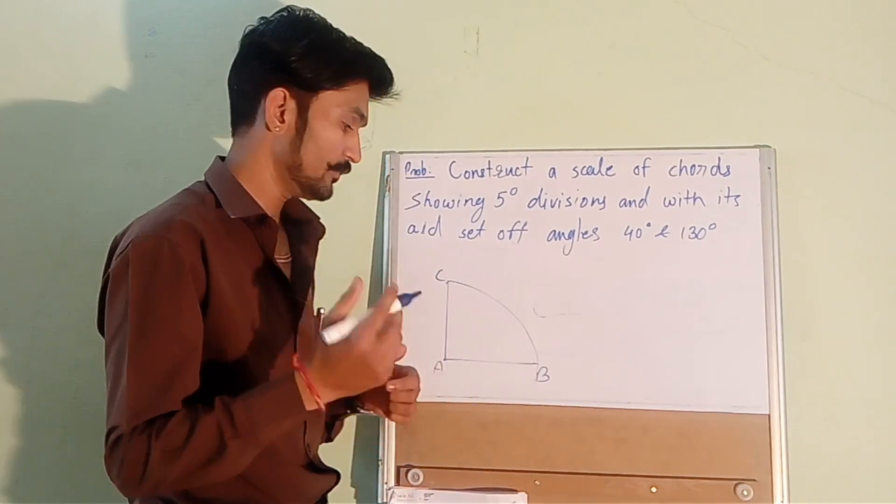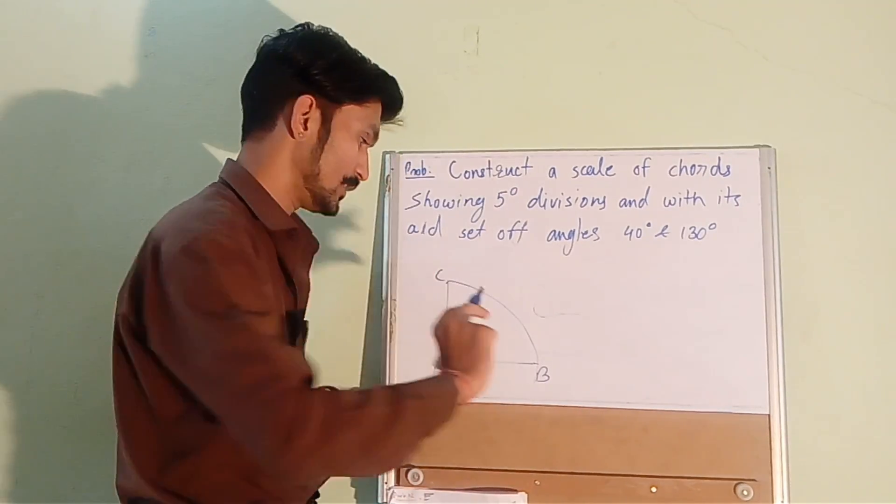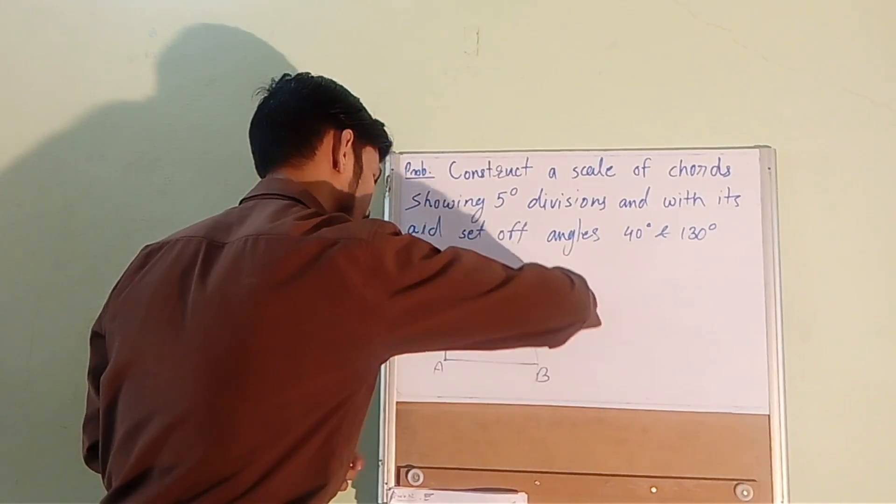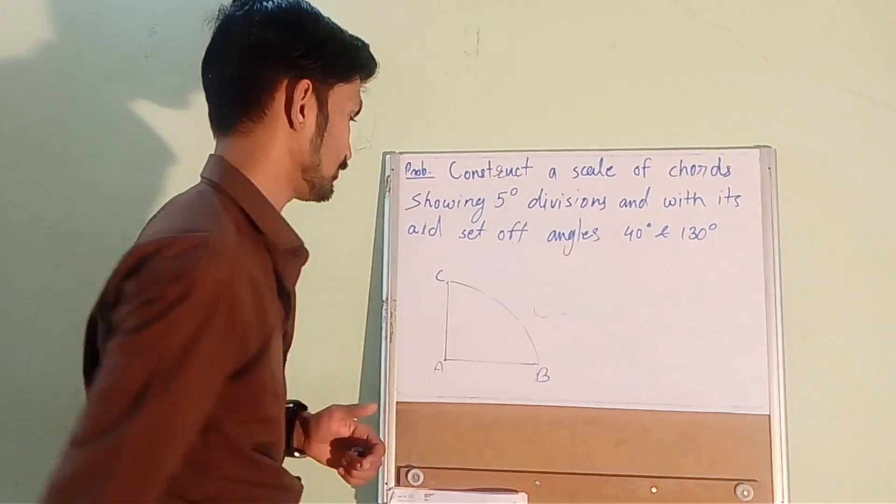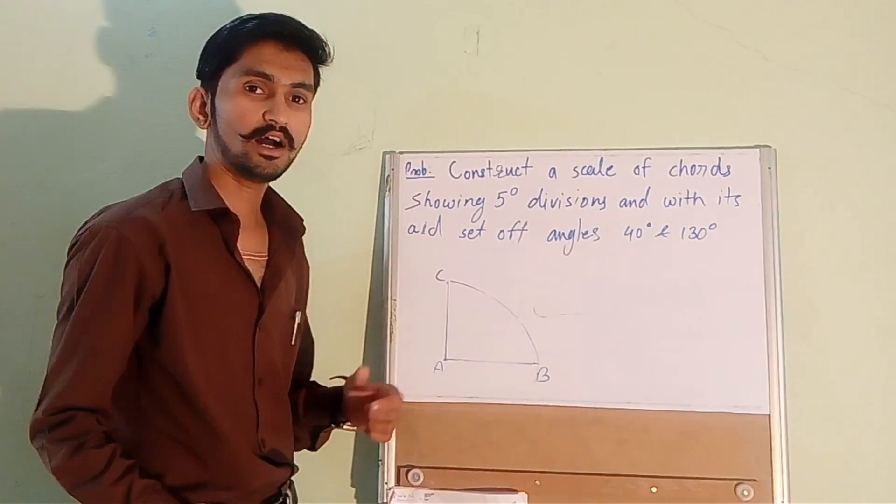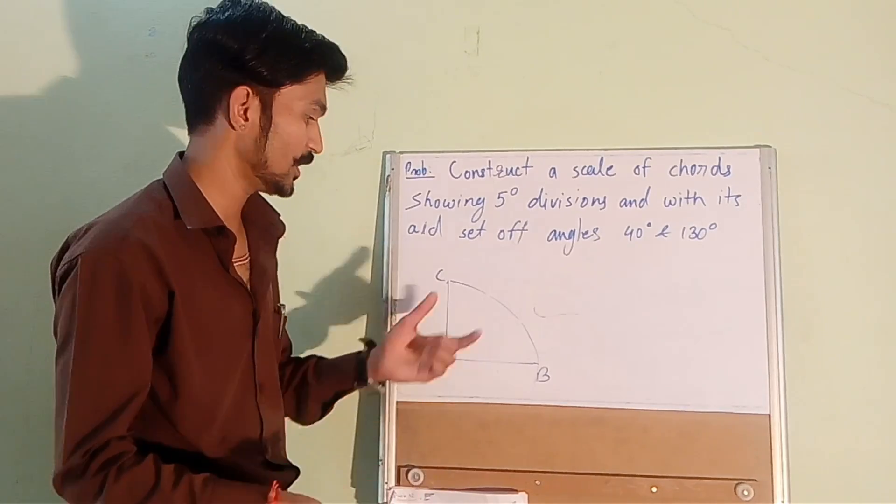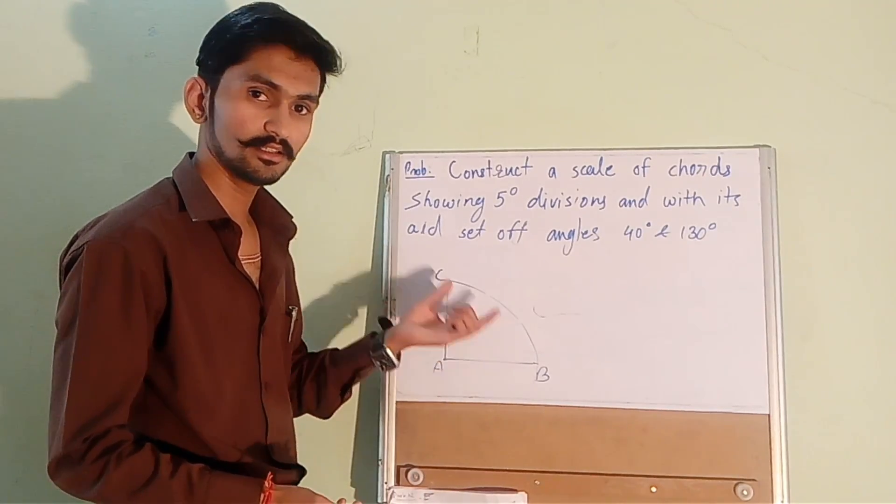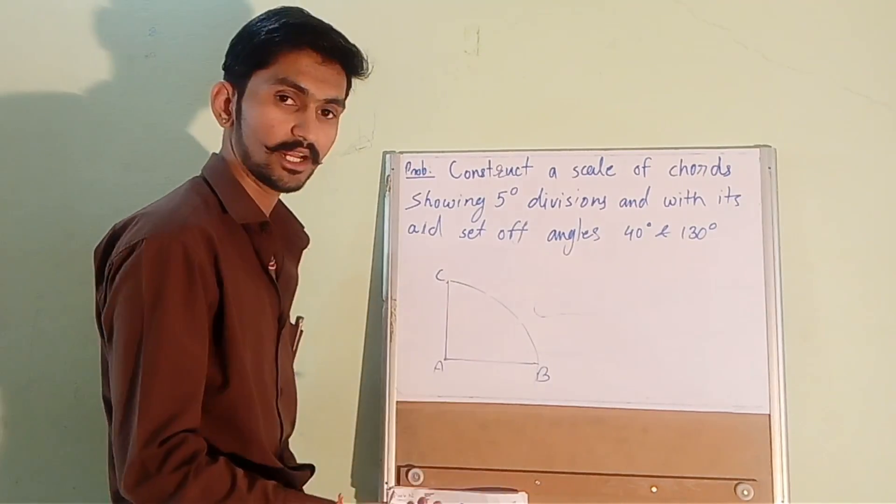So what I will do is I will open my divider and one two and three. So this is how in three to four attempts you can get the exact three equal parts with trial and error method.